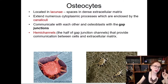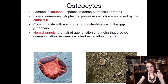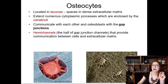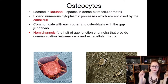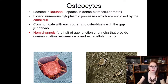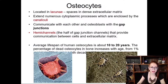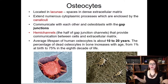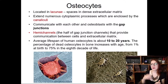Osteocytes also expose hemi-channels — half of a gap junction — which communicate the cytoplasm of one cell with the extracellular matrix, helping to monitor the concentration of different components in the extracellular material. Their average lifespan is up to 20 years. In young children almost all osteocytes are alive, while in aged individuals over 80, three out of four osteocytes are dead and remain embedded in their lacunae.